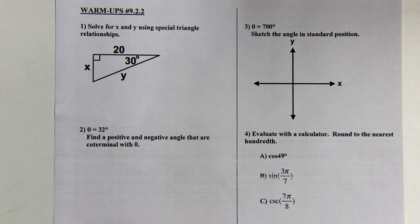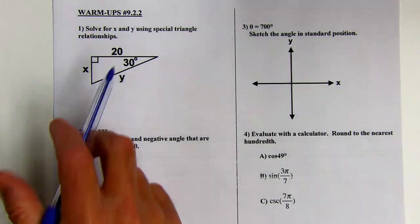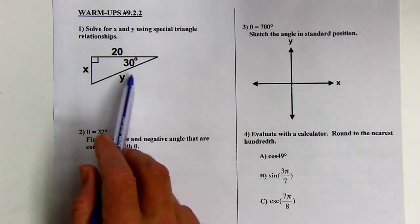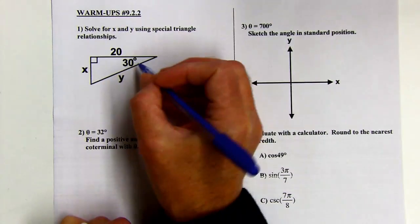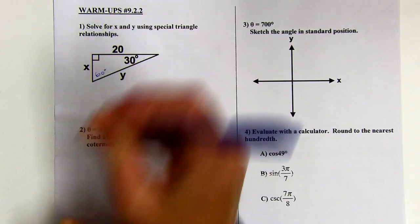Okay, here's warm-up 9.2.2. I'm going to solve for X and Y using a special triangular relationship. So this is a 30-60-90. This missing angle would have to be 60 degrees.